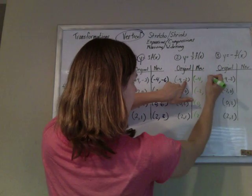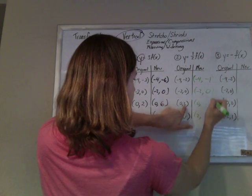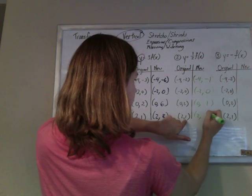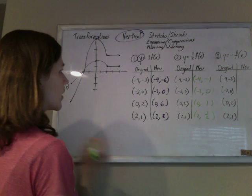So half of negative 2 is negative 1, half of 0 is 0, half of 2 is 1, half of 1 is 1 half. Beautiful. Multiply all the y values by 1 half.